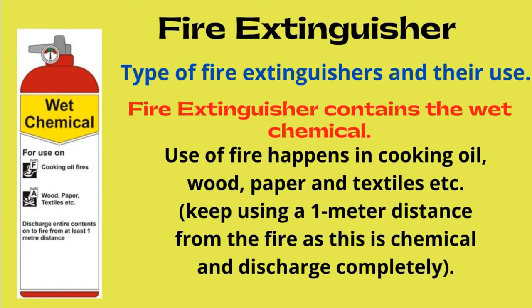Fire extinguisher containing wet chemical: used for fires involving cooking oil, wood, paper, and textiles. Keep a 1 meter distance from the fire and discharge completely, as this is a chemical agent.